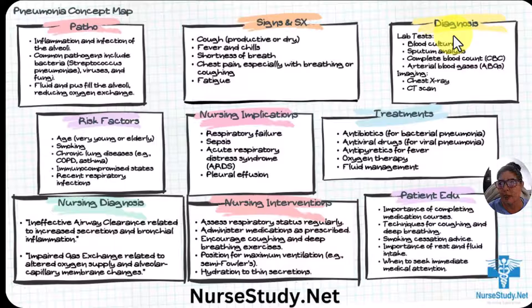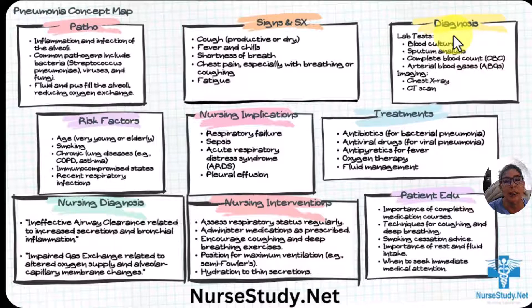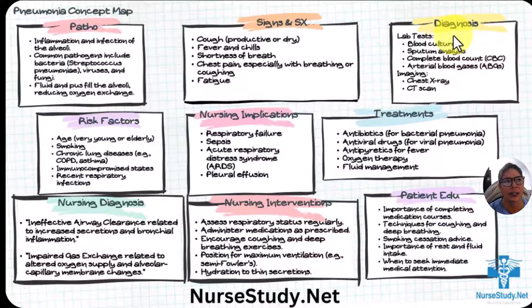Diagnosis is usually made by lab tests. We're going to do blood cultures — follow your facility's protocol on that. Sputum analysis, a complete blood count — you'll probably do a rainbow draw, but a CBC will be in there, and you're going to be looking at the white count especially. Arterial blood gases. For imaging, you're going to do a chest x-ray. Sometimes they may do a CT scan — not done a lot if it's obvious on the chest x-ray, but sometimes the healthcare provider will order one.